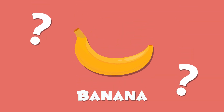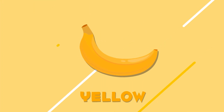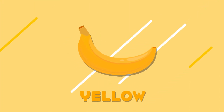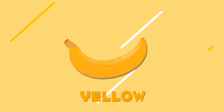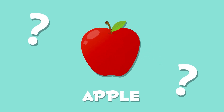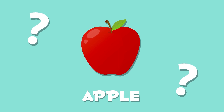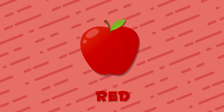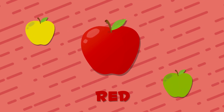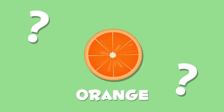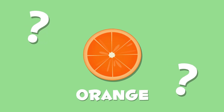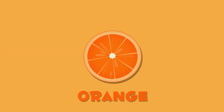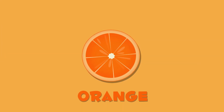Here we have a banana. Do you know what color a banana is? Yellow — a banana is yellow. I love bananas! And this apple — what color is it? Red. This apple is red. There are also green and yellow ones. And what color is the orange? Its name says it all — orange! The orange is orange. I love orange juice.